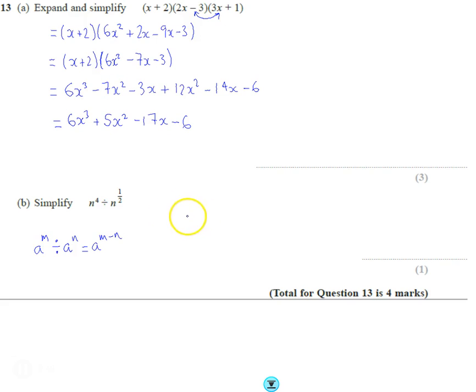So in this case, we're going to have n to the power of 4 minus a half, which is n to the power of 3.5, which is a bit annoying and a bit clunky to have.